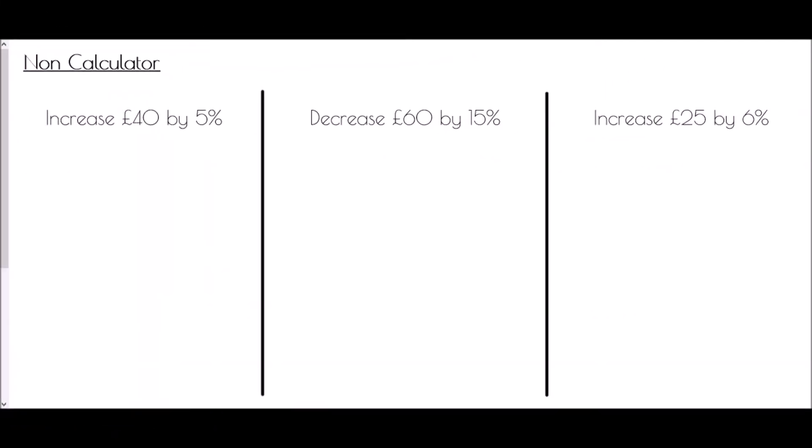We're going to begin by looking at how we do a percentage increase or decrease without a calculator. This begins with increasing £40 by 5%. When trying to find percentages of amounts, we always want to start with what 10% would be worth, because we just divide by 10. So £40 divided by 10 is £4.